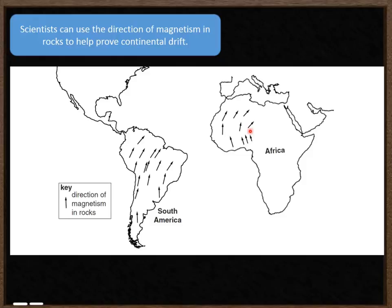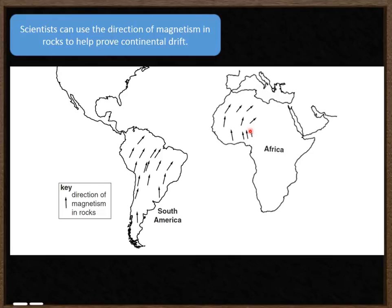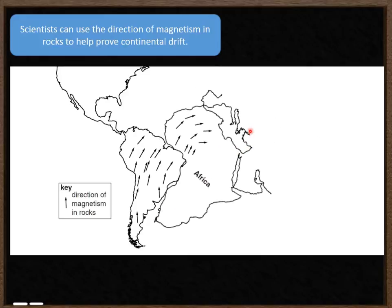What we can do is we know that rocks that were formed at the same time will have magnetism pointing in the same direction. So if we were to move the continent of Africa back to where we think it originally was,